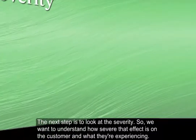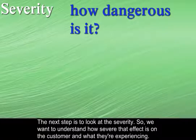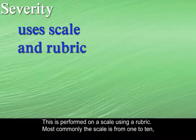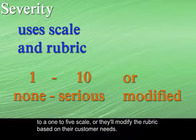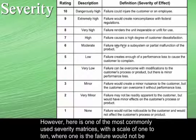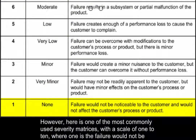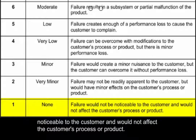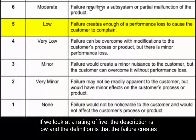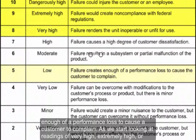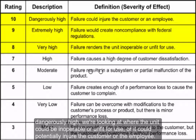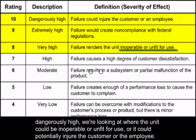The next step is to look at the severity — how severe that effect is on the customer and what they're experiencing. This is performed on a scale using a rubric, most commonly from 1 to 10, where 1 is no impact through 10, which is serious. Some companies may modify this to a 1 to 5 scale or modify the rubric based on their customer needs. Here is one of the most commonly used severity matrices: a rating of 1 means the failure would not be noticeable to the customer and would not affect their process or product. A rating of 5 means the failure creates enough of a performance loss to cause the customer to complain. At very high, extremely high, or dangerously high ratings, the unit could be inoperable, unfit for use, or could potentially injure the customer or the employee.